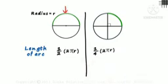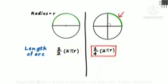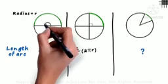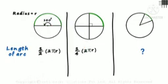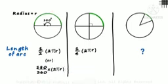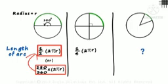In the first case, dividing into two portions gives 1/2 × 2πR. In the second case, dividing into four portions gives 1/4 × 2πR. For the third case, consider a sector with radius R and angle theta. For the semicircle case, it is 180°, so arc length is 180/360 × 2πR. Here 180 is the angle, 360 is the full circle angle, and 2πR is the circumference.